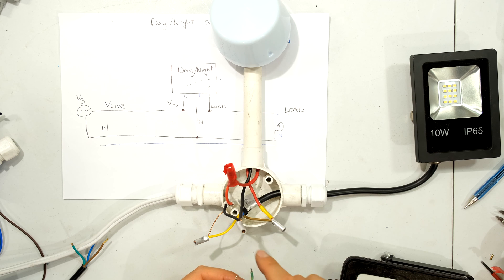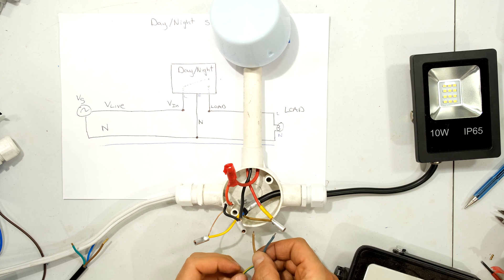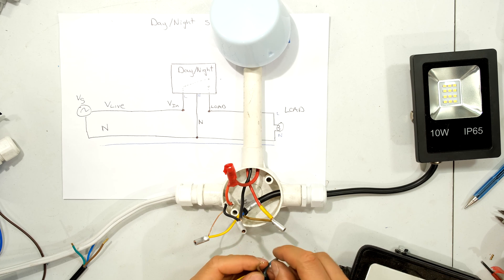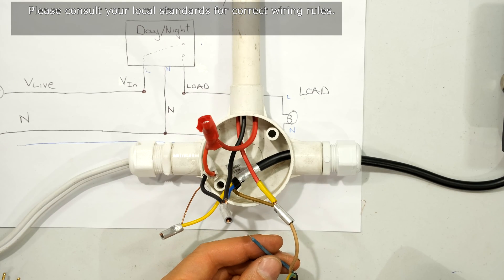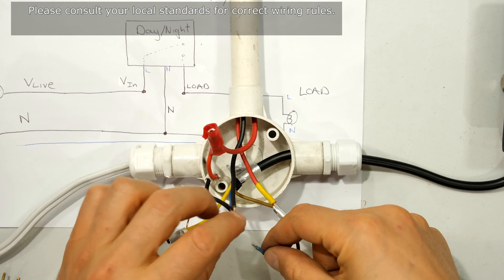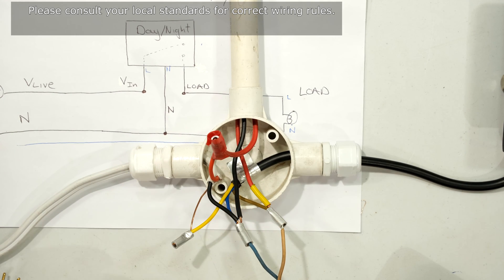All I need to do is connect the live to the same load live. So that could go over there. And then the neutral, all the neutrals go to the same place. So that would go there, for example.